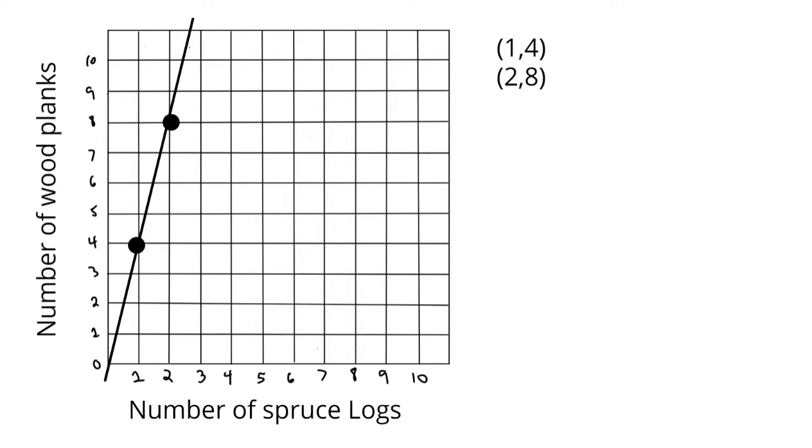So I can write those as ordered pairs. I see my first point is over one from the origin and up four. And then my second point is over two up eight. Now if I were to ask you, does this line graph represent an additive pattern or a multiplicative pattern? It's really kind of hard to tell just by looking at the line graph.